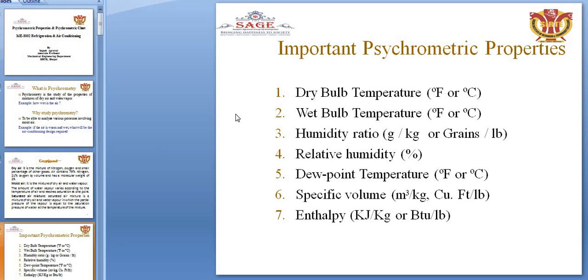The important psychrometric properties are: dry bulb temperature, wet bulb temperature, humidity ratio (in grams per kg or grains per pound), relative humidity (percentage), and dew point temperature.